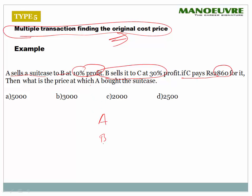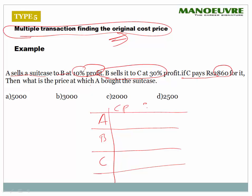Let's say A bought the suitcase for 100 rupees. A sells to B at 10% profit, so A's selling price is 110 — and 110 is B's cost price. B sells to C at 30% profit: 110 × (1 + 30/100) = 110 × 13/10 = 143. So C's cost price is 143 rupees.